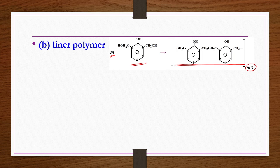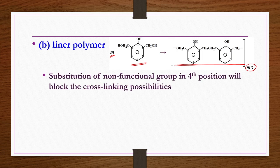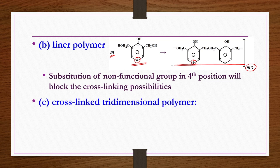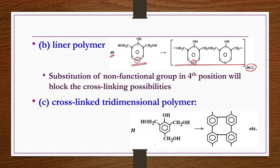This is for the linear polymer. Substitution of a non-functional group in the fourth position will block cross-linking possibilities. If you want to produce a cross-linked three-dimensional polymer, you take n moles of trimethylol phenol monomer and do the polymerization. Water is released during this reaction, and cross-linked structural polymers are produced. These are representative structures.